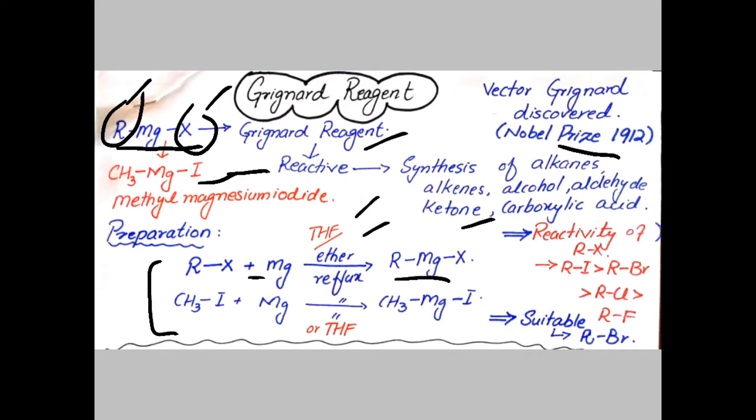The first time Grignard used methyl iodide reacted with magnesium ribbon in the presence of diethyl ether to produce methyl magnesium iodide.